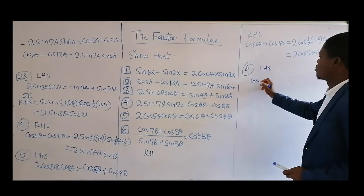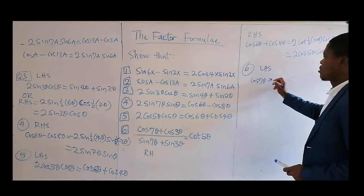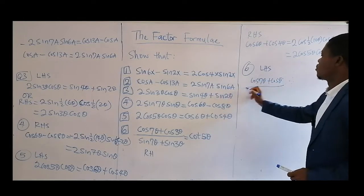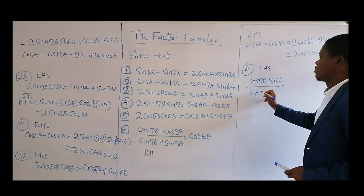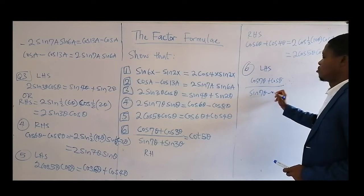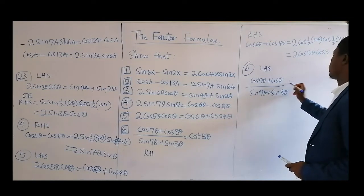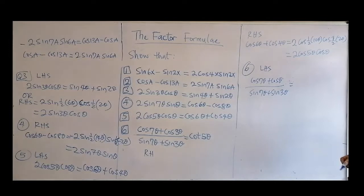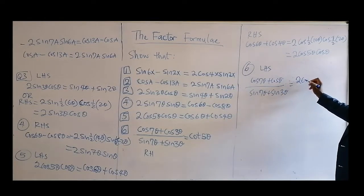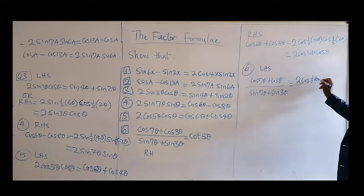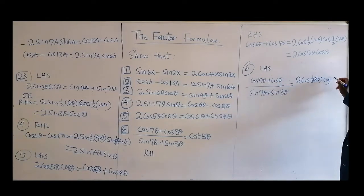From the left-hand side, we have cos(7θ) plus cos(θ), all over sin(3θ) plus sin(2θ). The numerator — addition of cosines — gives 2cos of half of (7θ + θ) = 8θ, times cos of half of (7θ minus θ) = 6θ. So numerator = 2cos(4θ)cos(3θ).